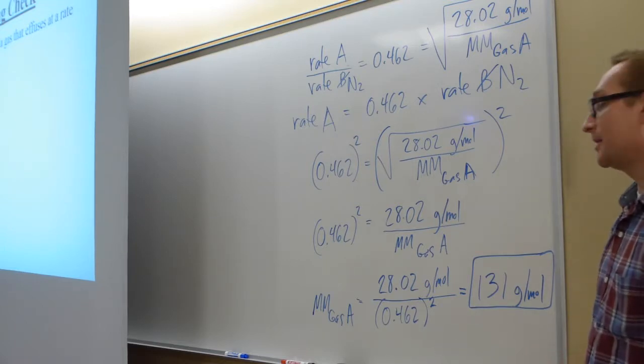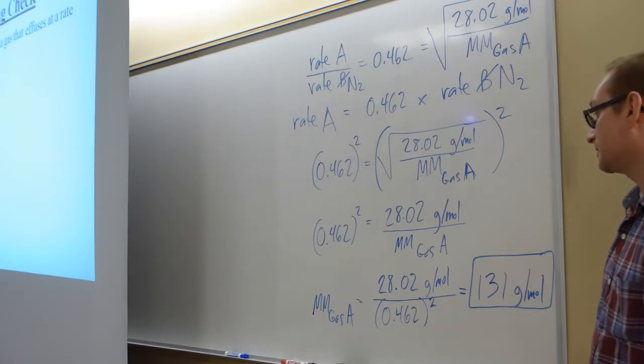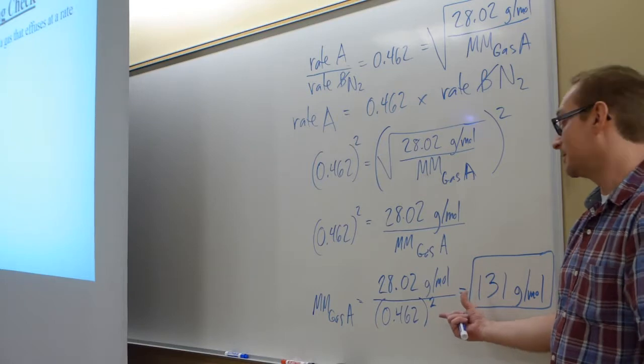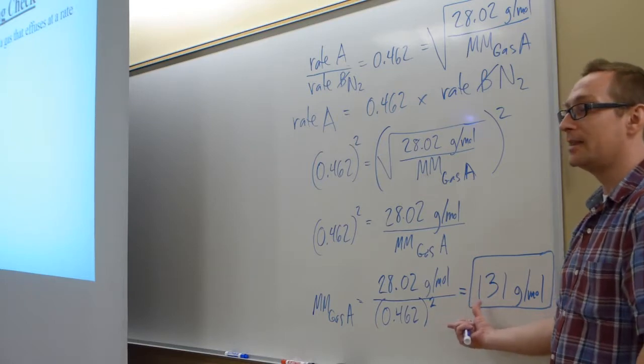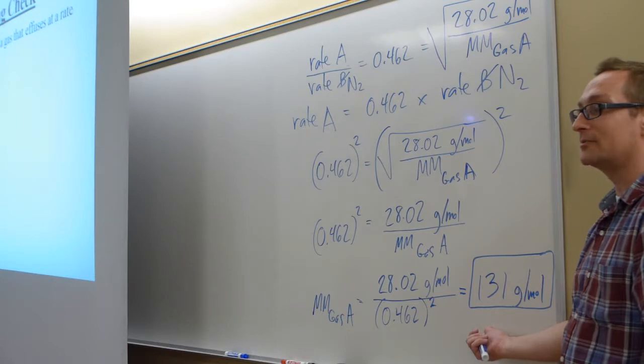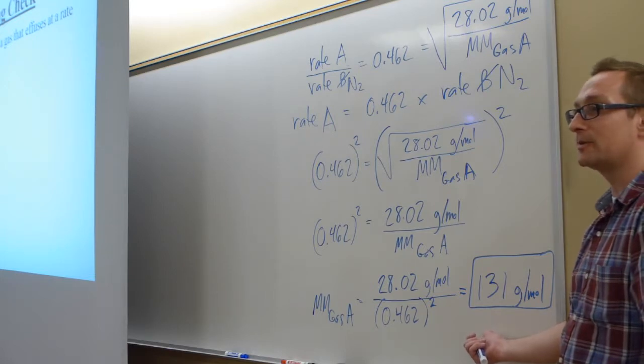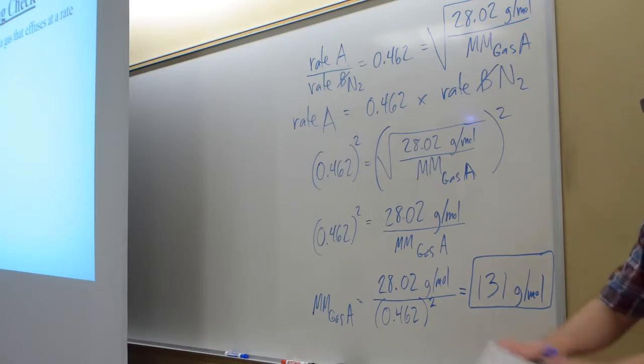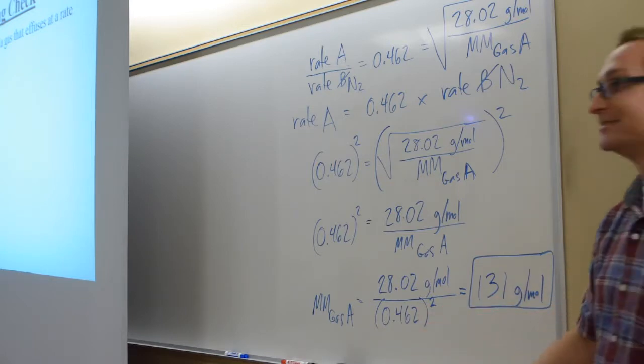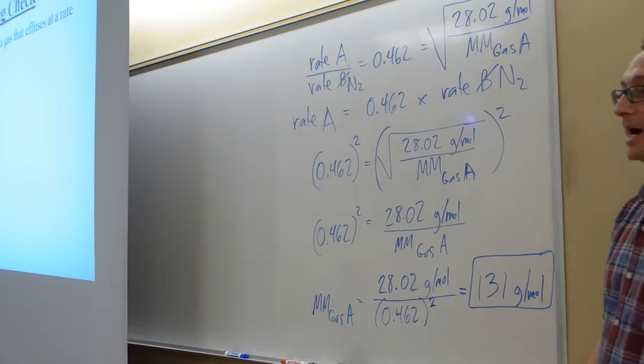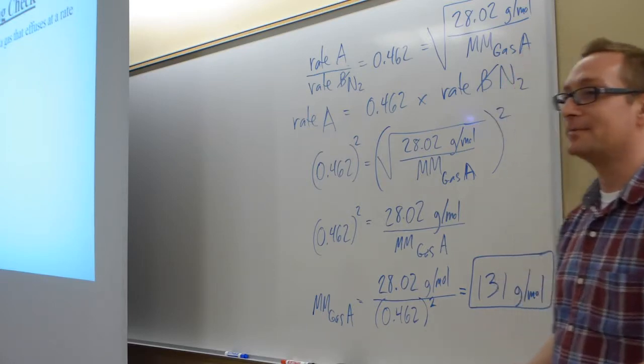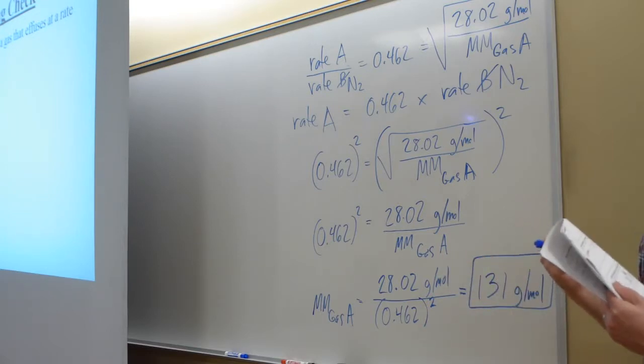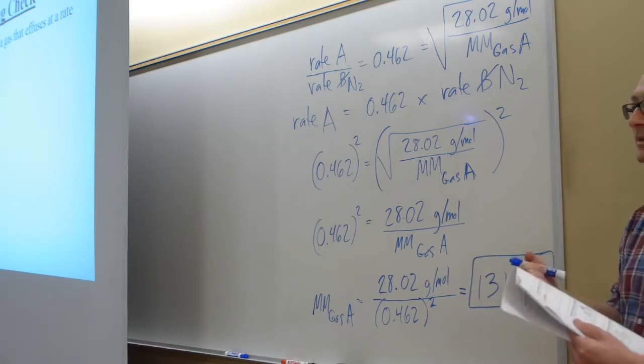I didn't think about this until now, but that would make for an interesting problem on a test. Combining rate of diffusion, which won't be on this test, so don't worry. But you could combine rate of diffusion and then say what gas is it and write a nuclear symbol from that. Like combining concepts. If you can combine concepts from different parts of the class, then you're really garnering an overall big picture of chemistry.